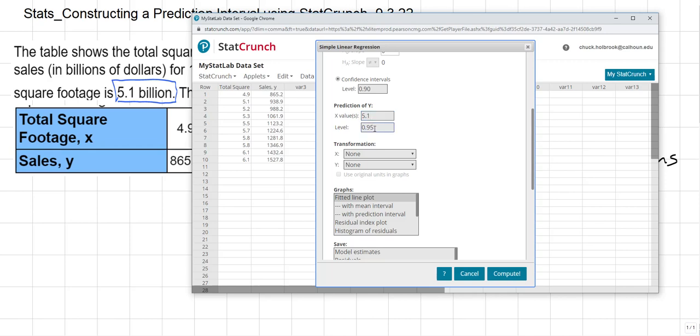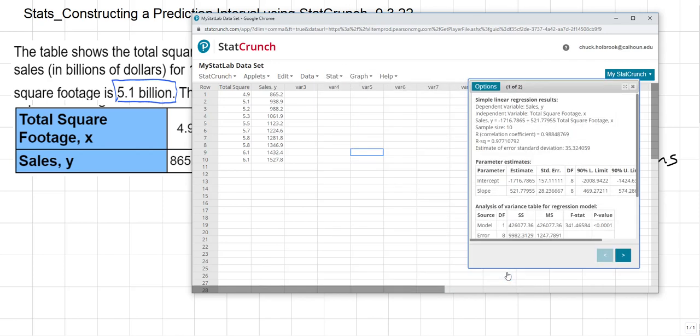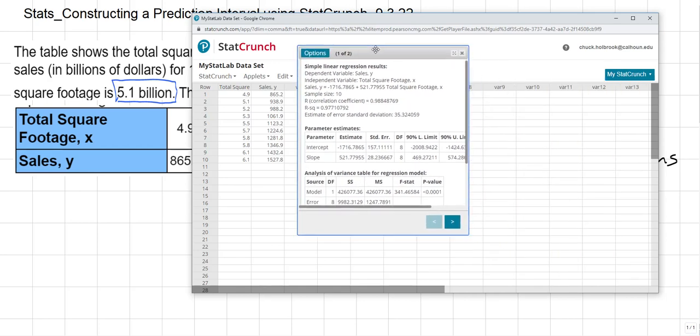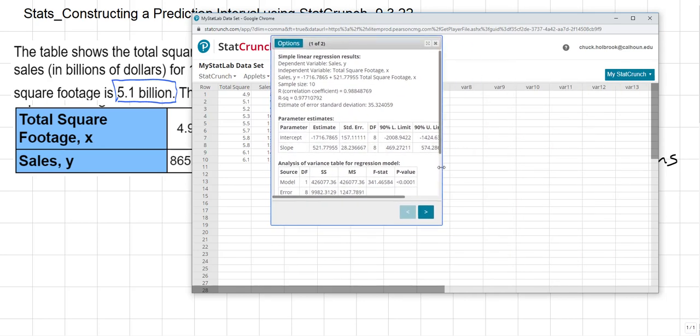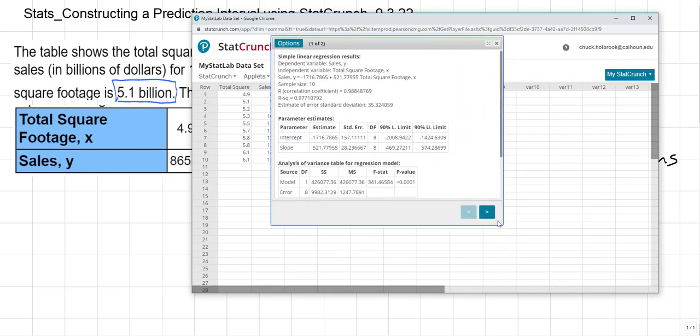So now, change this to 0.90, because that's what we're calling for in the problem. And then we're ready. We just left-click compute. And now you're given this table in this pop-up window.